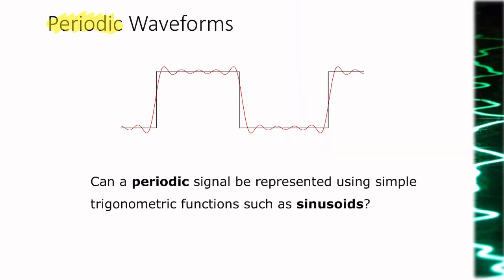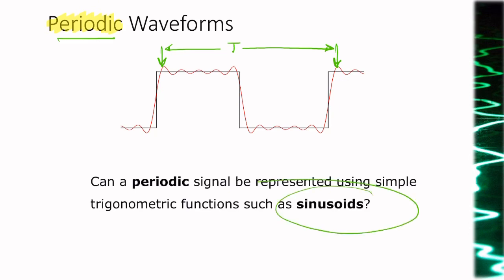Let's look at the red signal here — it repeats itself after some period T, so we call that a periodic waveform. The question we're going to answer is: can a periodic waveform be represented using other periodic waveforms — in this case, sinusoids? Can we use sine waves to represent a periodic waveform? Just as a spoiler, the answer is yes, and that's exactly what Joseph Fourier did for us. That's what the Fourier series is all about.